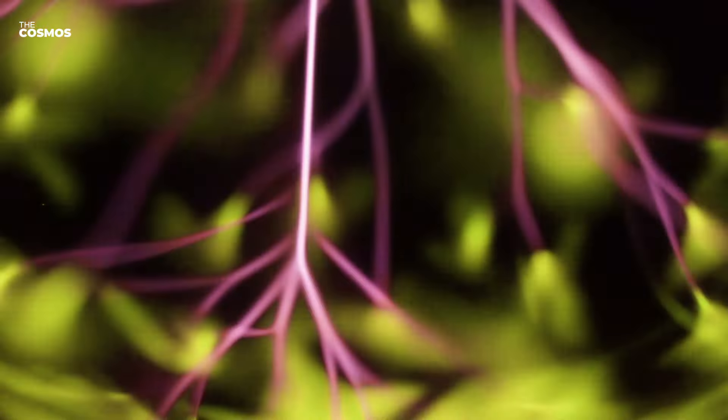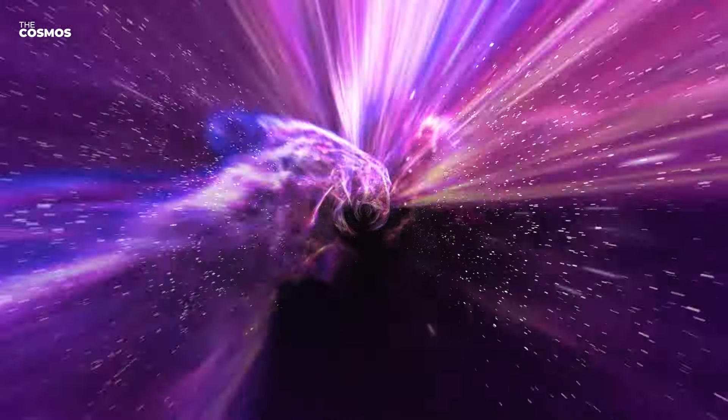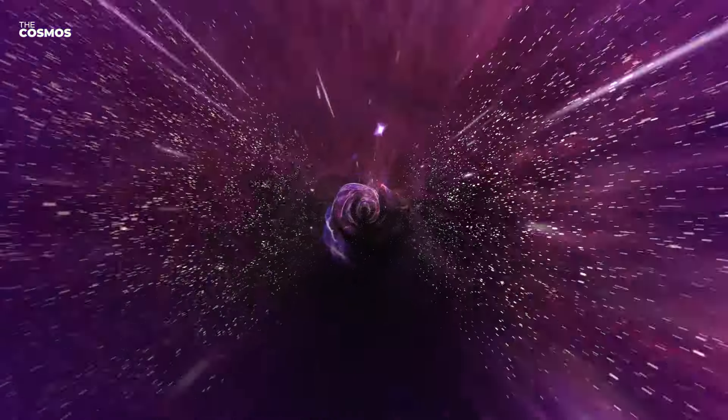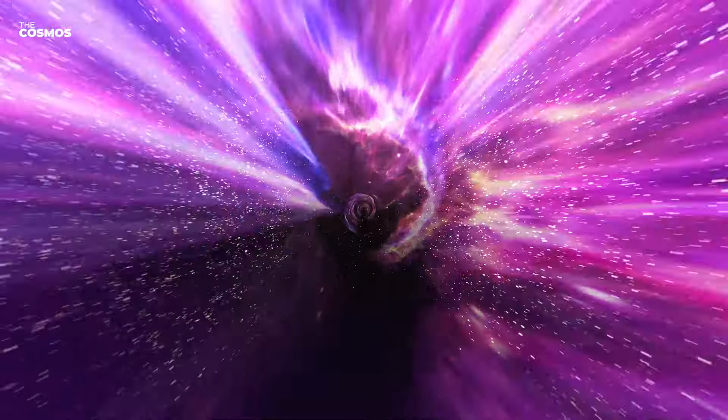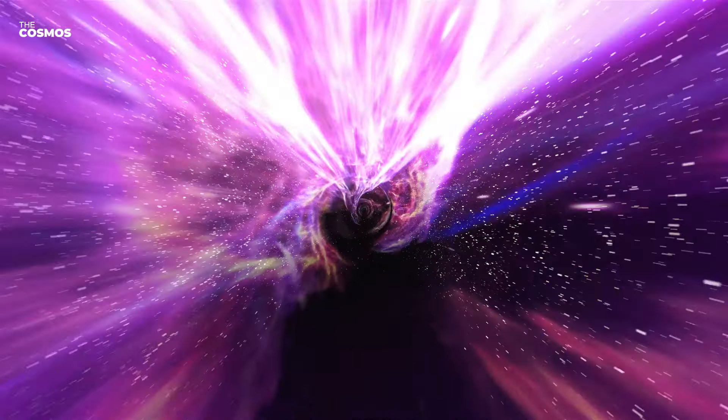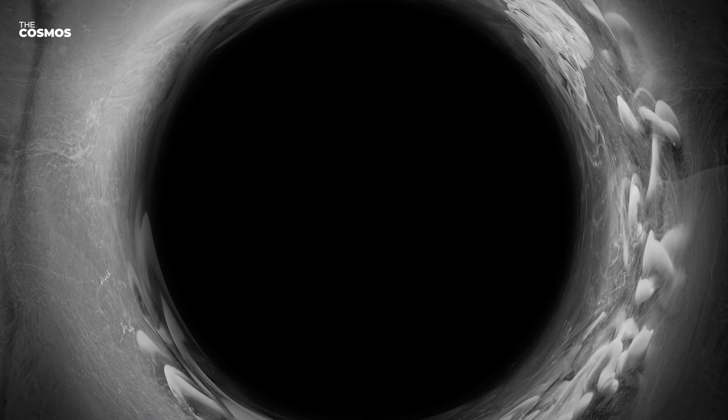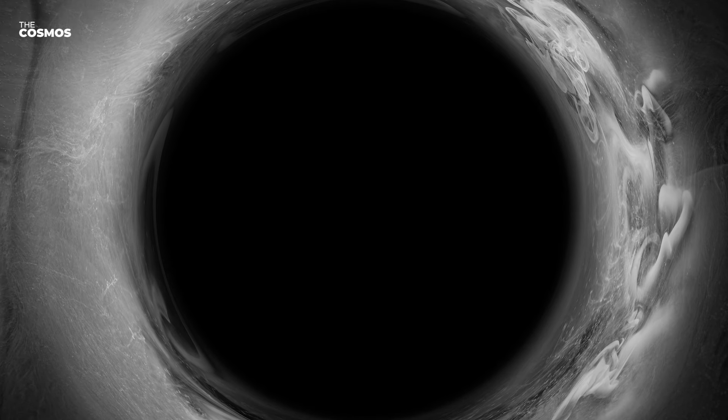As dark energy continues to grow, its force starts to overpower the gravity holding galaxies together. Eventually, even the bonds within galaxies begin to break. Stars are flung out of their orbits and galaxies start to disintegrate. This stage is a spectacular yet terrifying sight. Galaxies unraveling and stars scattering like dandelion seeds in the wind.